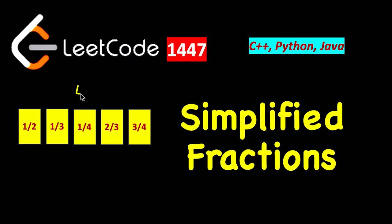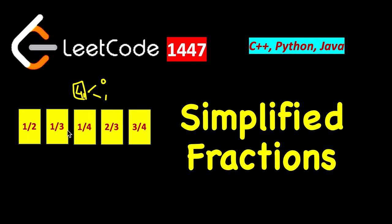If we are given a number 4, we have to find all the fractions between 0 and 1, not including 0 and 1. So we write 1/2, 1/3, 1/4, 2/3, 3/4. In all these cases the denominator is more than the numerator because the fraction has to lie between 0 and 1. The denominator values should be less than or equal to 4, and these fractions have to be unique.